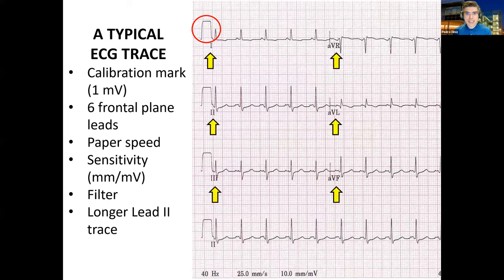Next, you should look for the leads that have been captured on that ECG. In this case, we see the markings for lead 1, lead 2, lead 3, AVR, AVL, and AVF — these are the six frontal axes of the ECG.